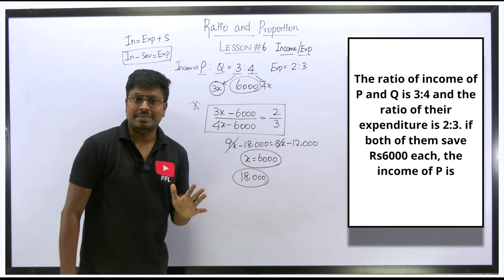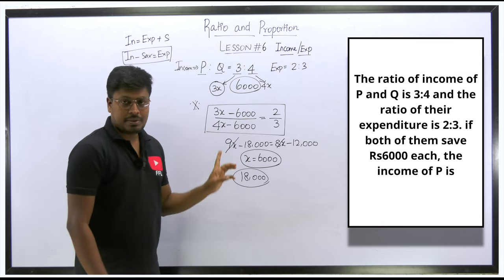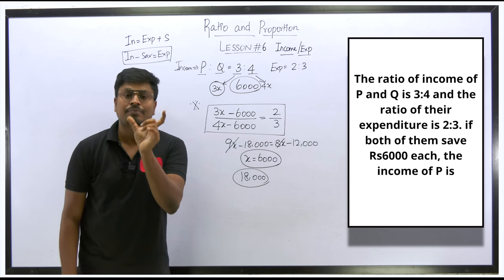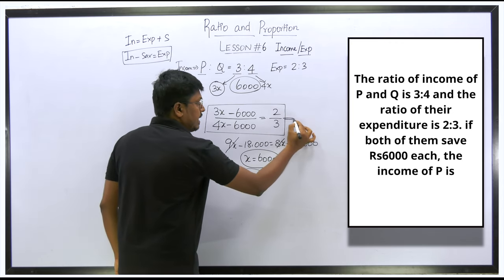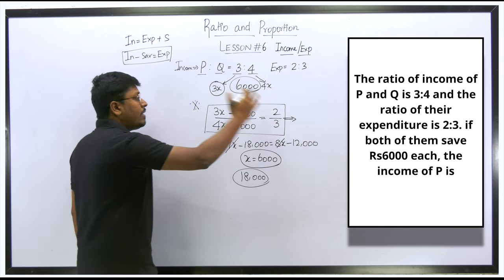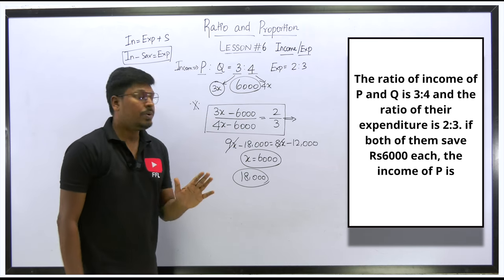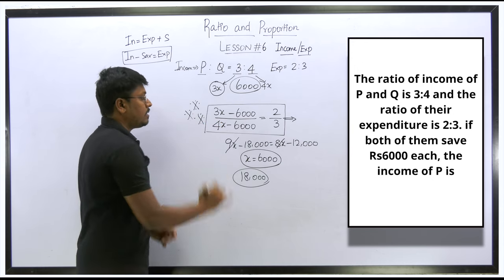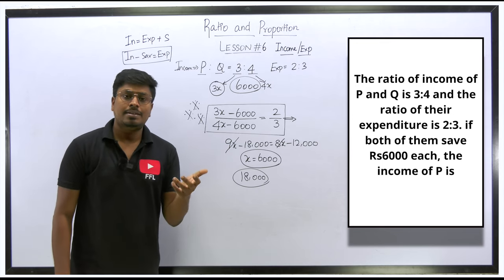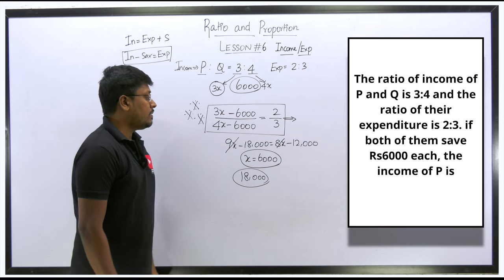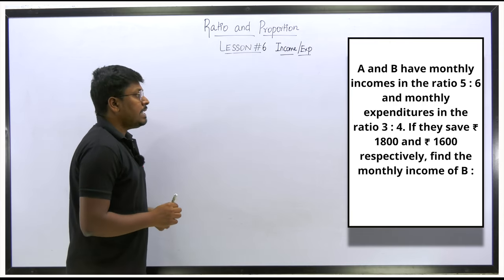This is how easy it is — no traditional lengthy method, no special shortcut, just the basic formula: income equals expenditure plus savings. From that, income minus savings equals expenditure. Most textbooks write '3x − 6,000 = 2' without explaining why — you need to understand that this comes from the income equals expenditure plus savings relationship. The income of person P is ₹18,000.